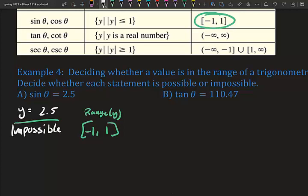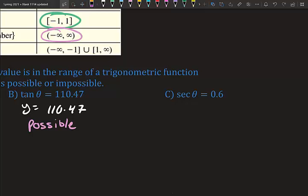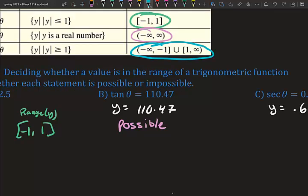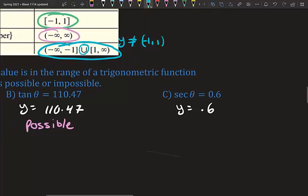For part b, tangent θ = 110.47 — looking at tangent functions, y can be any real number from negative infinity to infinity, so this is possible. For part c, secant θ = 0.6 — secant's range is negative infinity to negative one, and one to infinity, so y cannot be between negative one and one. Since 0.6 falls in that excluded region, this is impossible.